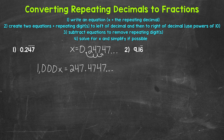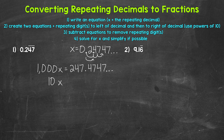Multiplying both sides by 1,000 gives us 1,000x equals 247.47 repeating. Now we need an equation with those repeating digits just to the right of the decimal. We shift the digits one place to the left by moving the decimal once to the right, so we're multiplying by 10. Whatever we do to one side of an equation, we must do to the other, so we multiply the left side by 10 as well. That gives us 10x equals 2.47 repeating.